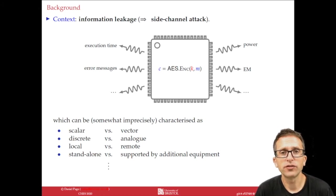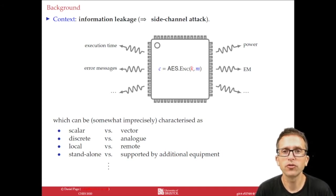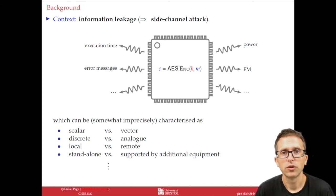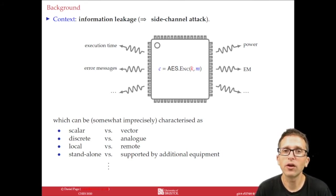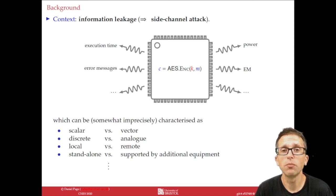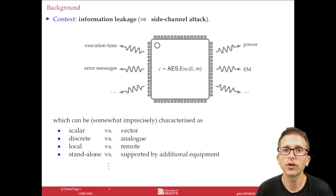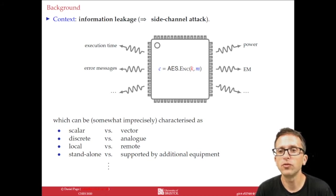Information leakage itself can be characterised in all sorts of different ways depending on the form of leakage. For example, the leakage might be presented as a scalar or vector quantity, it might be discrete or analogue in nature, and you might have to collect it via local or remote means or it might require additional equipment — collecting the power consumption of a target device would require, for example, an oscilloscope. We're particularly interested in analogue information leakage, which includes power consumption and electromagnetic emanation.